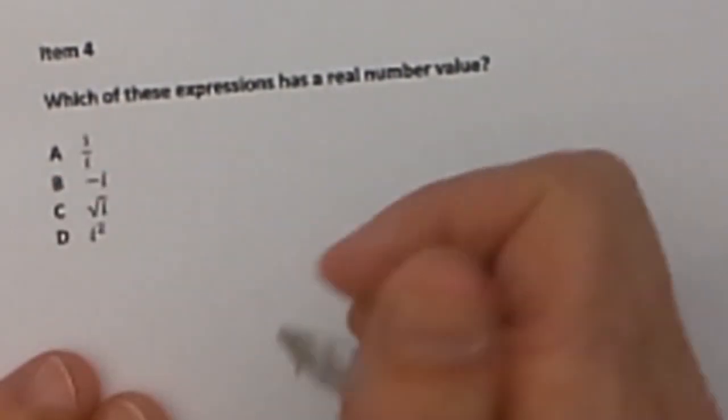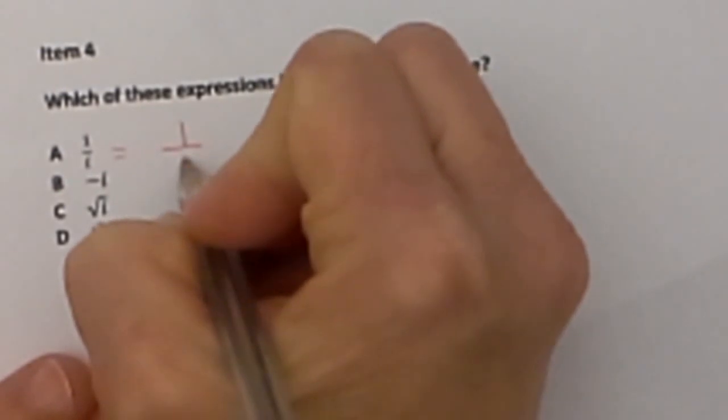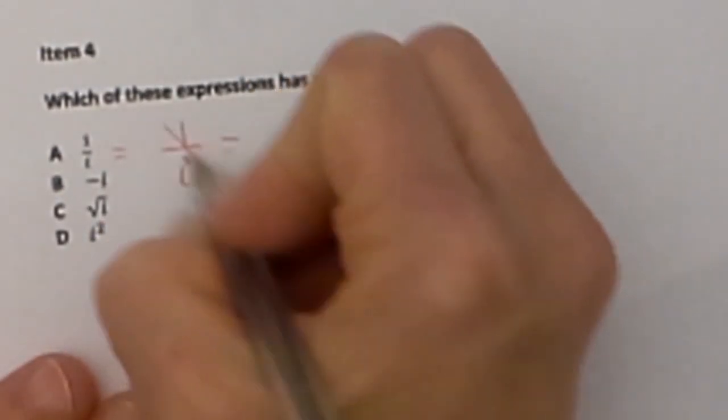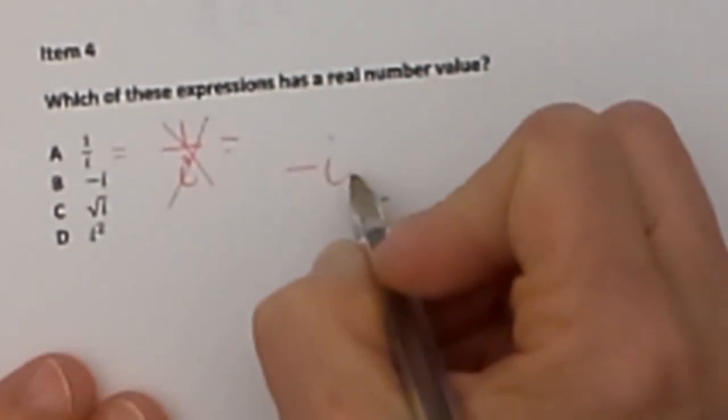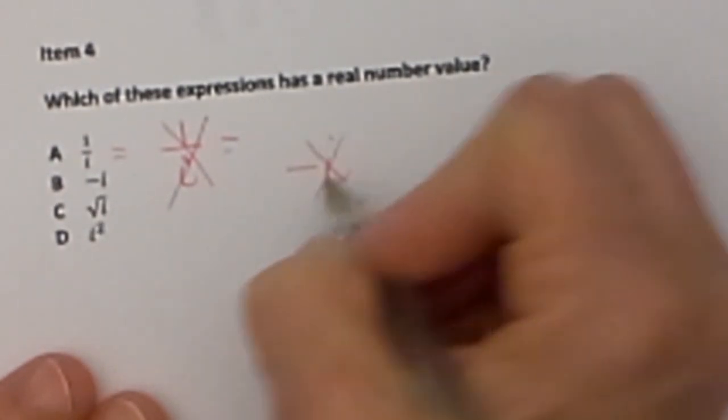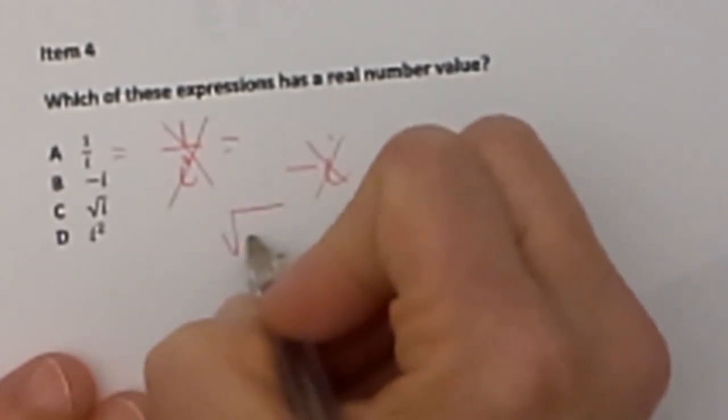The first choice is 1 over I. It is really hard to read this, so I am going to rewrite it. It is 1 divided by I. Well, any time you have an imaginary, it is not a real value. So it is definitely not that one. B is negative I. Again, we have an imaginary number. That one is not a real number.